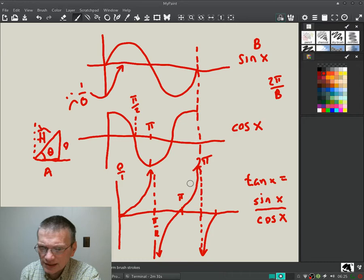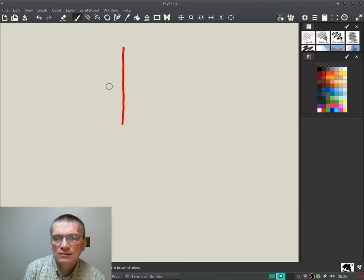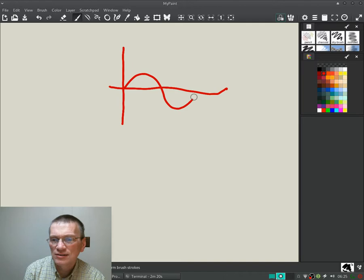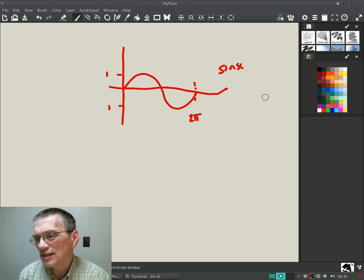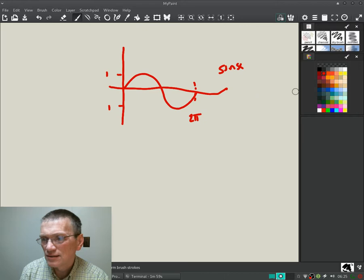Really quickly, if we draw a sine, we draw it a little smaller here, a little sloppier. Again, here's sine. Remember it's going up to one here. This is sine of x.